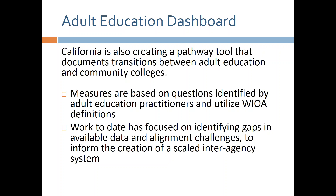We decided we needed to expand to another area. A big challenge in our state is that adult education is split between K-12-based organizations and community colleges, and we needed to find a way to put the data together and look at what happens when students transition from adult ed to postsecondary. We're using WIOA-aligned metrics and have a prototype built, but the biggest challenge is getting the data to line up, since K-12 and community college organize information very differently.